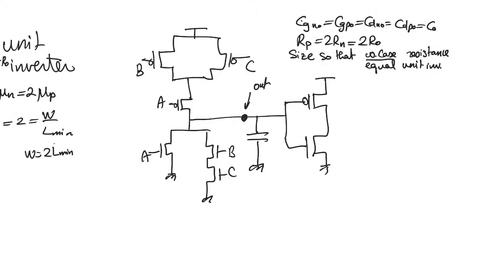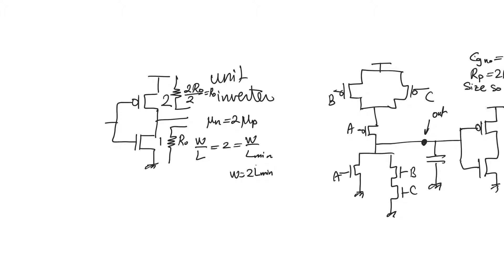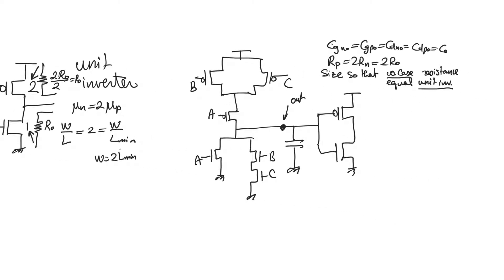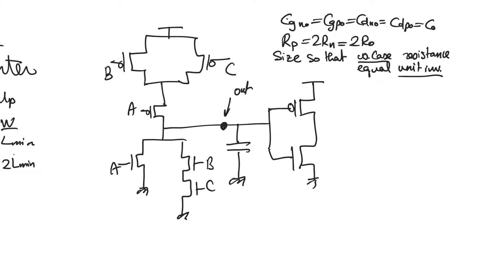We have to think about what each part of this design requirement means. Resistance equal to the unit inverter means that when we observe a path, we must see a resistance of R0, either in pull-up or pull-down. A resistance of R0 is observed in the pull-down path if the equivalent W/L is 1, and in the pull-up path if the effective W/L is 2 — because that is what gives the required resistance through the PMOS.